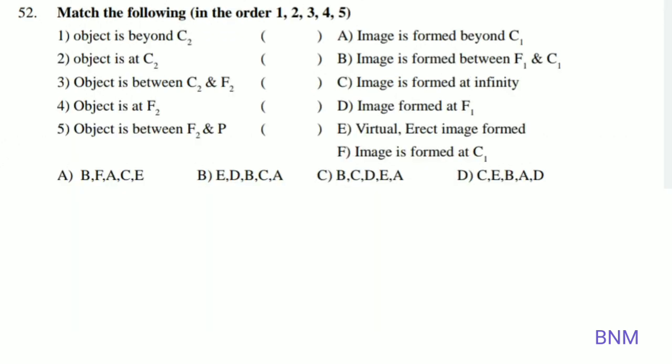Match the following in order 1, 2, 3, 4, 5. Object beyond 2F2: image is formed between F1 and 2F1. Object at 2F2: image is formed at 2F1. Object between C2 and F2: image is formed beyond 2F1. Object at F2 (focal point): image is formed at infinity. Object between F2 and P: virtual erect image. The right answer option is B, F, A, C, E.